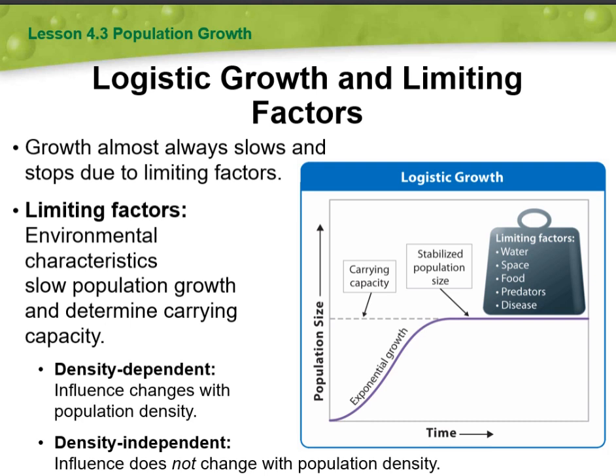When a population reaches its carrying capacity, which is the maximum number of individuals an environment can sustain, the limiting factors become more pronounced as resources become scarce and competition increases. The population growth rate slows down until it reaches a stable equilibrium. This is important because understanding logistic growth and limiting factors is crucial in studying population dynamics and the delicate balance between organisms and their environment.